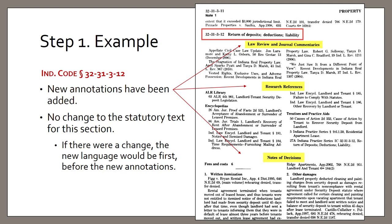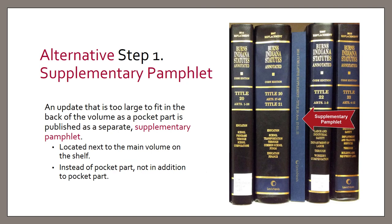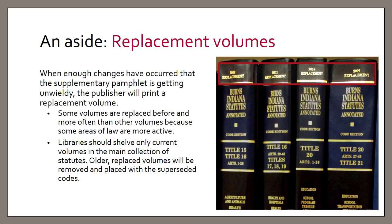When a pocket part becomes too large to fit in the back of the volume, it will be printed as a freestanding supplementary pamphlet, which sits on the shelf next to the main code volume it's updating. If there's no pocket part, check for a supplementary pamphlet instead. When enough changes have occurred that the supplementary pamphlet becomes unwieldy, the publisher will print a replacement volume. Libraries should shelve only current volumes in the main collection; older replaced volumes will be removed to the superseded codes.